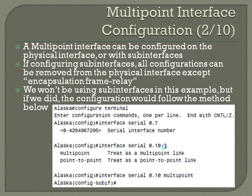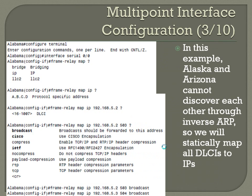In this example, Alaska and Arizona cannot discover each other through inverse ARP, so we will statically map all DLCIs to the IPs.